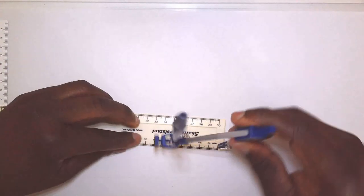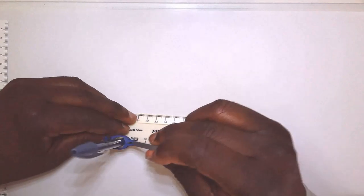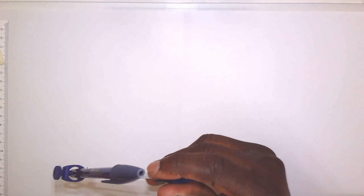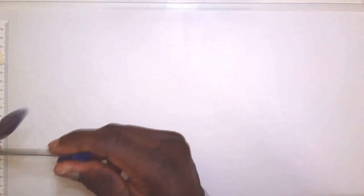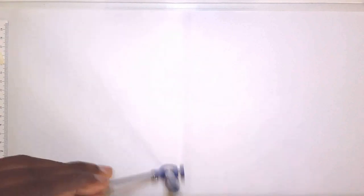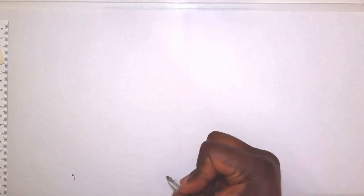We get our compass set to 100 millimeters. Then at one end of the line, scribe an arc like so. Then on the other end, scribe an arc like so, similar to the exercise we've done thus far. That is point A and that is point B.